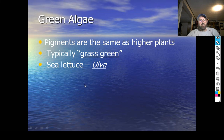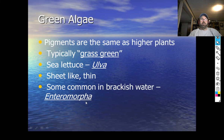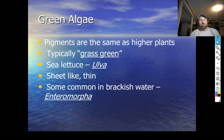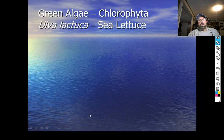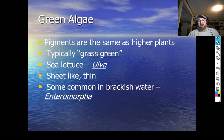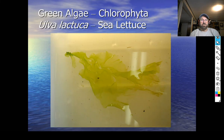A couple of algae you probably want to know: the first is Ulva lactuca — sea lettuce. It's a green sheet algae. If you've ever eaten sushi, the green algae they wrap around the sushi is actually sea lettuce — they toast it and dry it and use it as nori. Enteromorpha — or Enteromorpha intestinalis — is another fairly common green algae. 'Entero' means intestine, so it's named for intestines because it's a tube-like green algae.